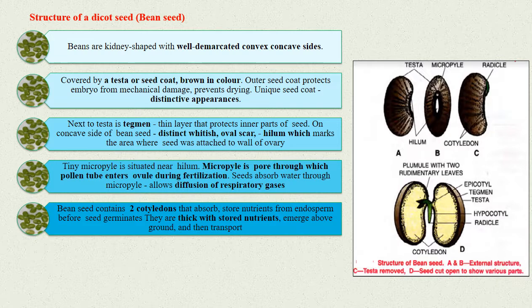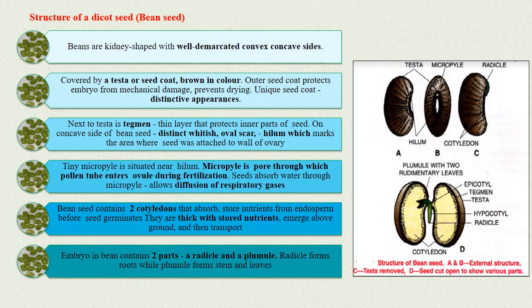If you separate the two cotyledons, then between them you will find the embryo. The embryo in bean seed contains two parts: a radicle and a plumule. The radicle forms the roots while the plumule forms the stem and leaves of the developing plant.